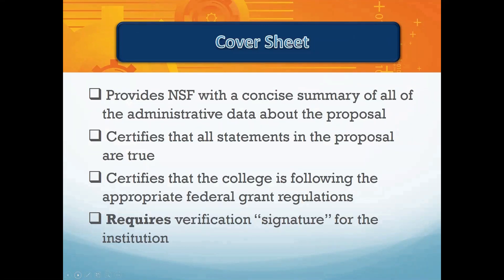Let's talk about some tips for completing the cover sheet. The cover sheet provides NSF with a concise summary of all the administrative data about the proposal. Included is a requirement for college certification that all statements in the proposal are true and that the proposer will follow the appropriate federal grant regulations. A question and checkbox completed by the AOR for the college constitutes an electronic signature on behalf of the institution. There is no actual physical or electronic signature required. Note that the AOR must get all the way to the bottom of the cover sheet section to reach this critically important authorization question. Only the AOR has the permission granted by the college and set up in Fastlane to check off on the certification authorization in the online system.